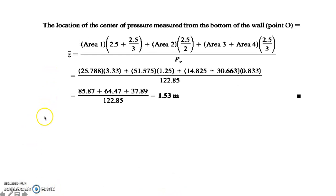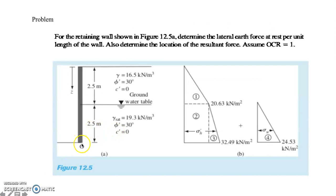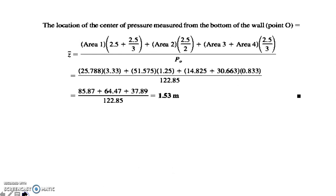To locate the resultant force, denoted by z̄, take moments about point O at the base. Multiply each area by its distance from its centroid to the reference point, sum those moments, and divide by the total force computed. The location of the total force from the bottom of the retaining wall is 1.53 meters.